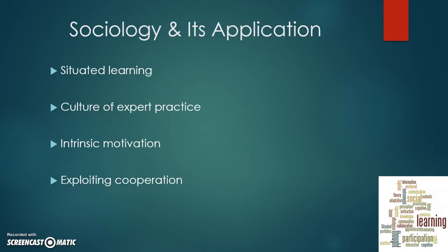Sociology refers to the social learning environment, because learning doesn't take place in a vacuum. Situated learning refers to the environment in which you want the student to learn and transfer that knowledge to the real world. The culture of expert practice involves the teacher showing the student how to tackle a particular problem. Students are also intrinsically motivated — there is self-satisfaction in accomplishing the work. Exploiting cooperation recognizes that learning takes place when you talk with other people, which is why group work is central to sociological learning.